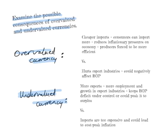The consequences of an overvalued currency: first, you'd have cheaper imports, so consumers can import more. It also reduces inflationary pressures on the economy because many economies import raw materials. If these raw materials and components are cheap because they're imported, this doesn't put cost-push inflationary pressures on the economy. Additionally, domestic producers are forced to be more efficient so they can compete with imports.